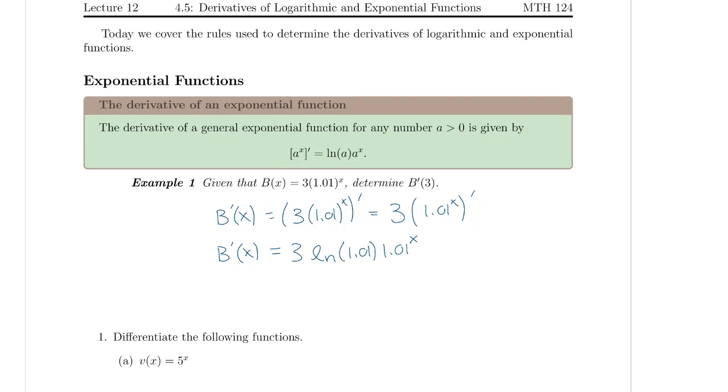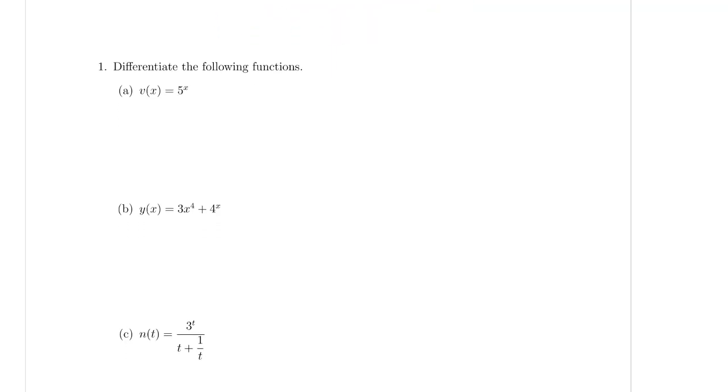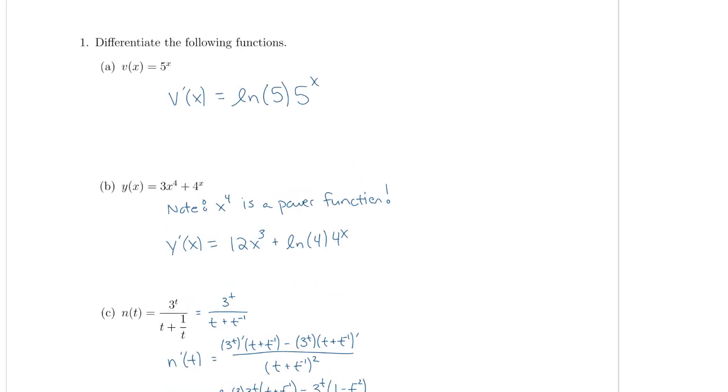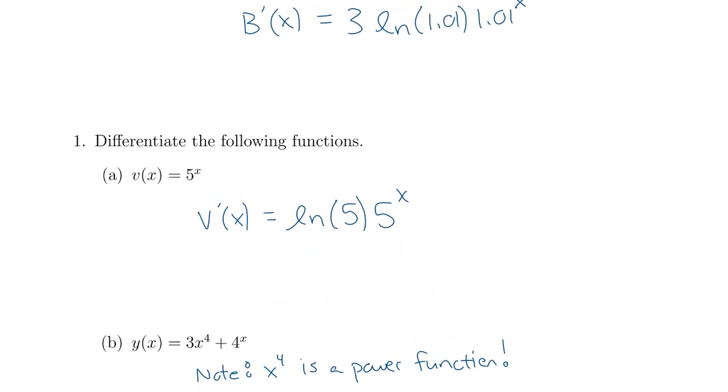So go ahead and try these functions, and I'll provide those solutions now. So let's look at these solutions. So you can see for the first problem, this follows directly from the derivative. So we notice that this function is an exponential with a base of 5. And so the rule is that the derivative of any exponential is the natural log of the base times the original function.